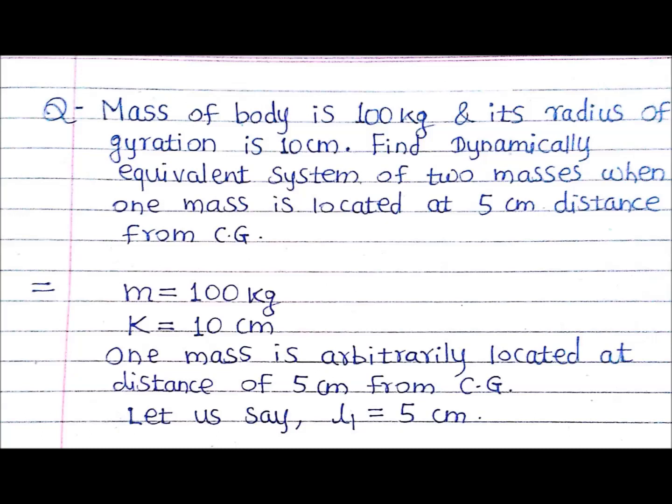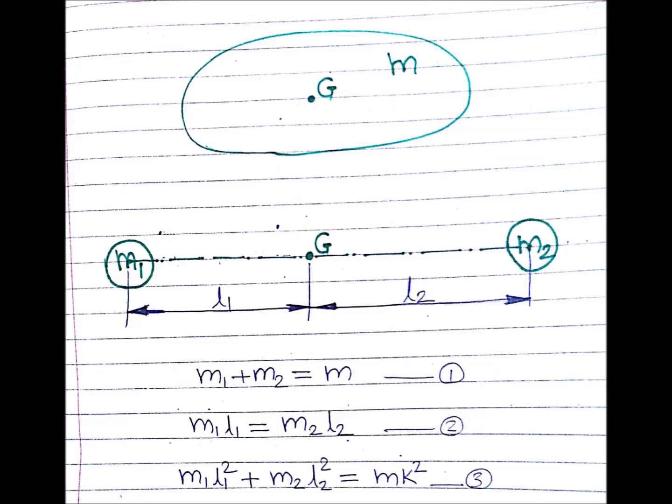We are having one rigid body with mass M, and we have to convert it into two point masses. M1 and M2 are the two masses at distances L1 and L2 from CG respectively. Those two point masses should behave in the same manner as the original body having mass M.